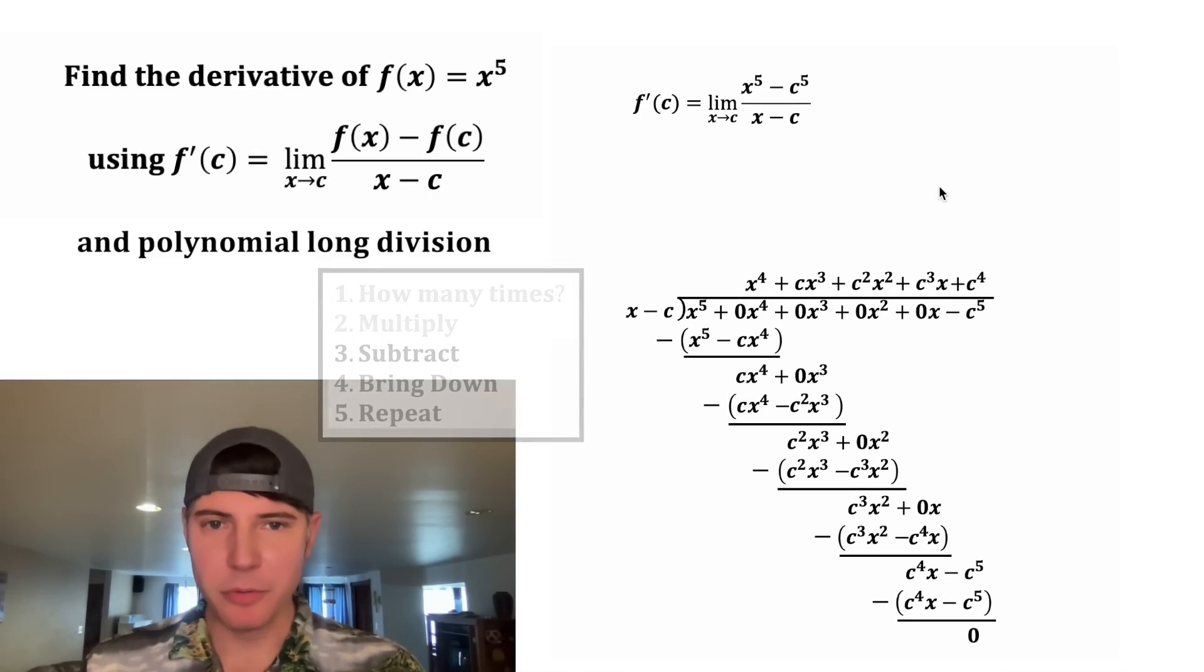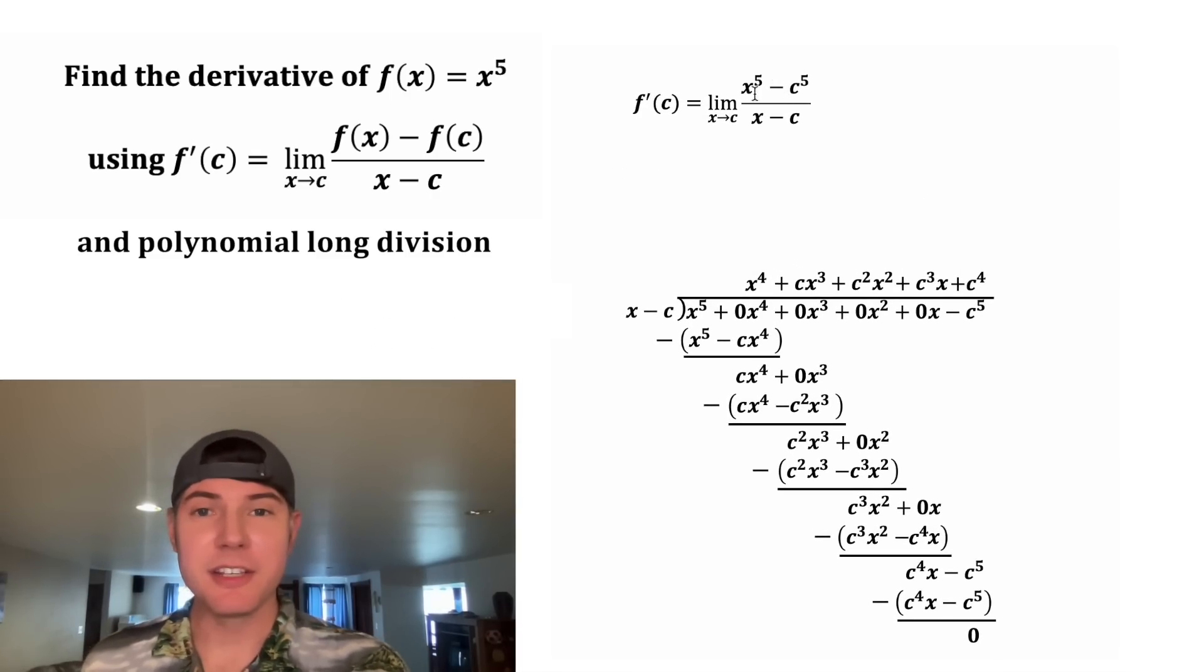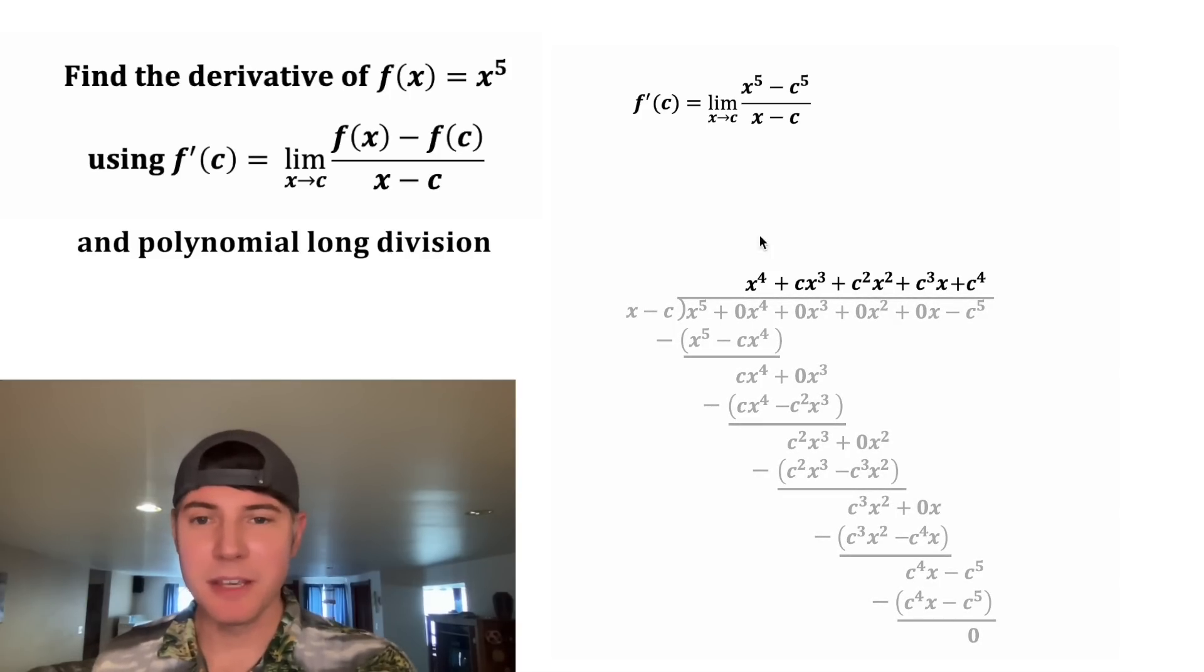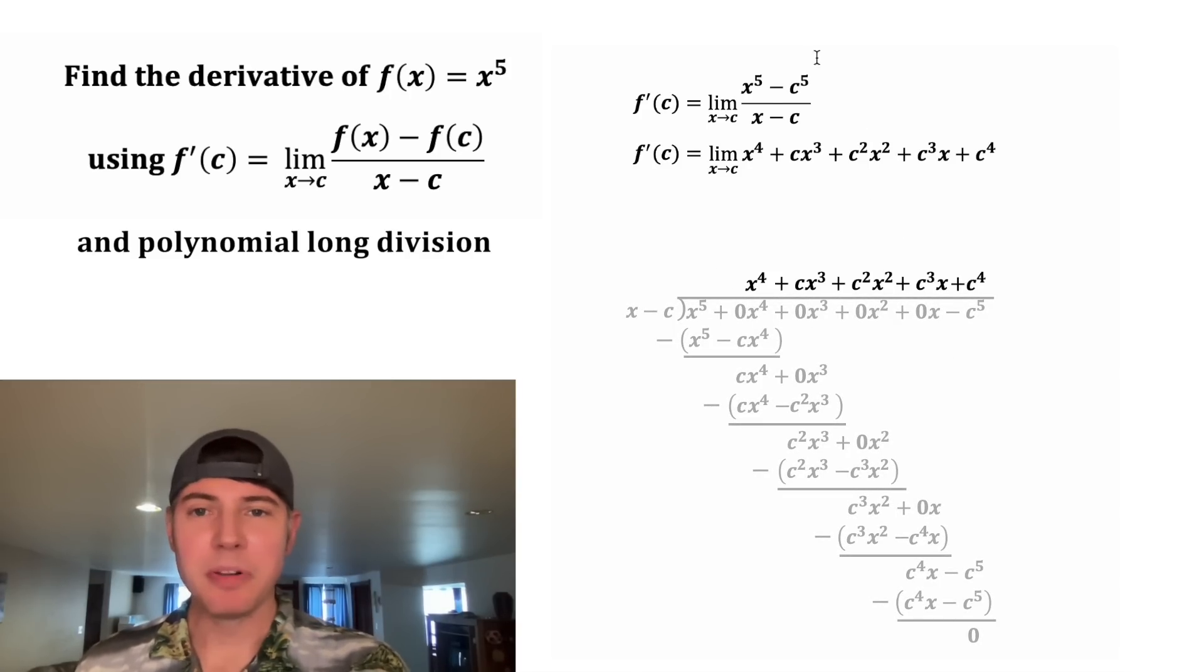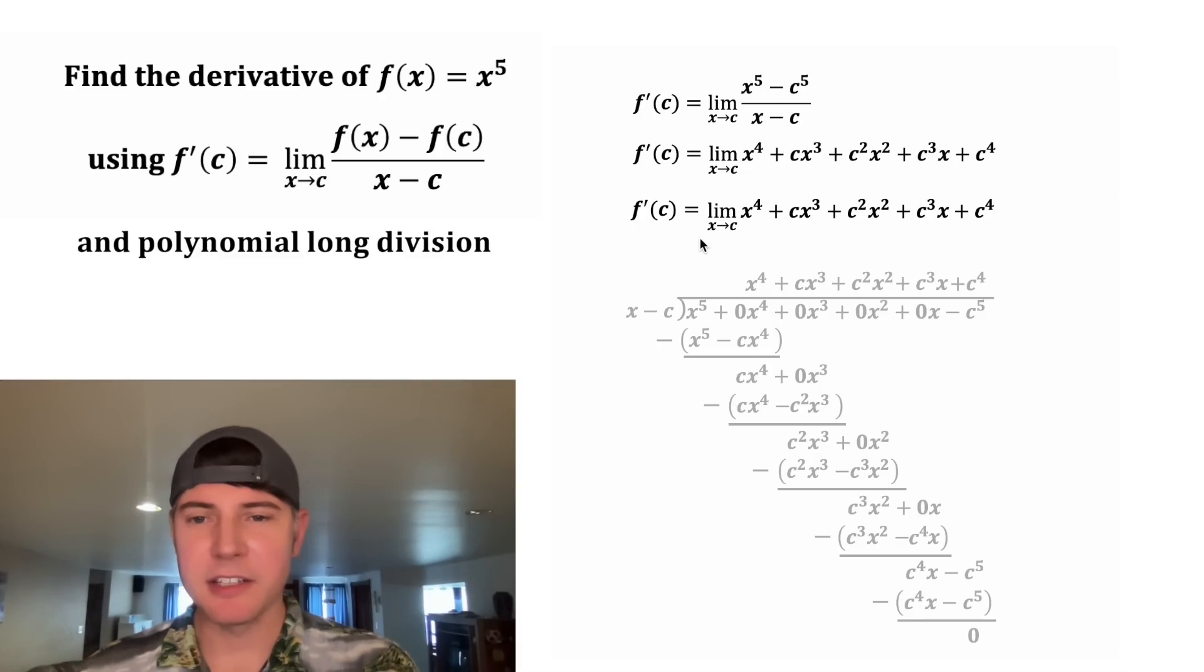So now let's give us a little bit more room to work. So this fraction, this (x^5 - c^5)/(x - c), is the exact same thing as this polynomial. So in the place of this, we can plug in that polynomial. And now let's copy this again. And let's apply the limit.